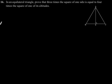Exercise 6.5, question number 16: In an equilateral triangle, prove that 3 times the square of one side is equal to 4 times the square of one of its altitudes. So let us consider this equilateral triangle with side...